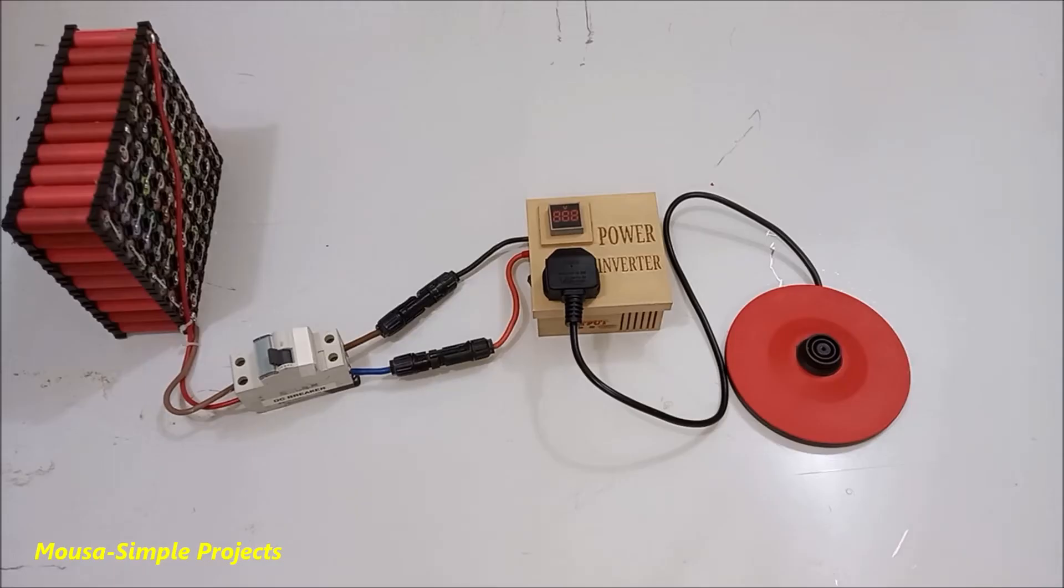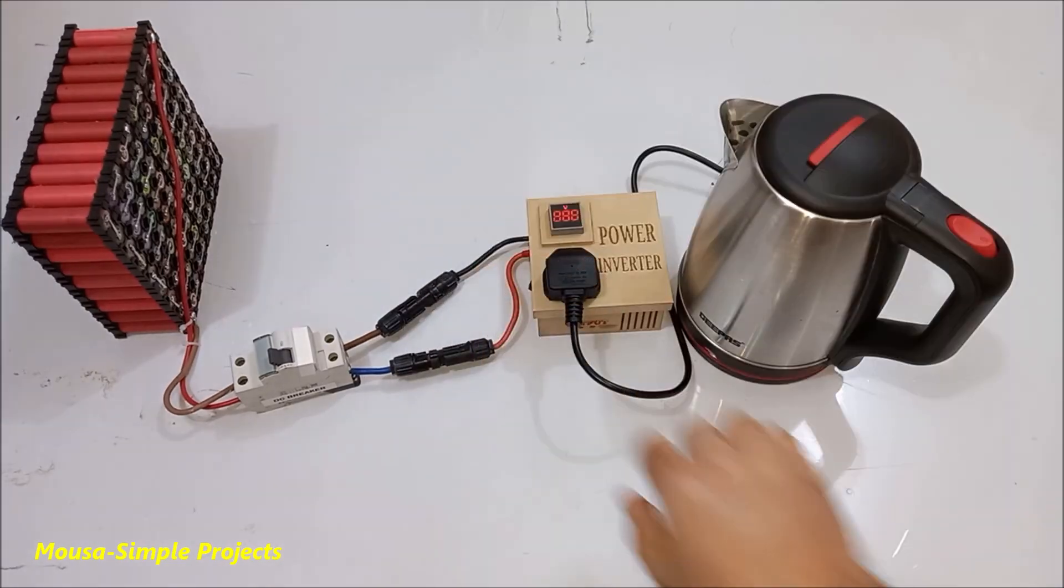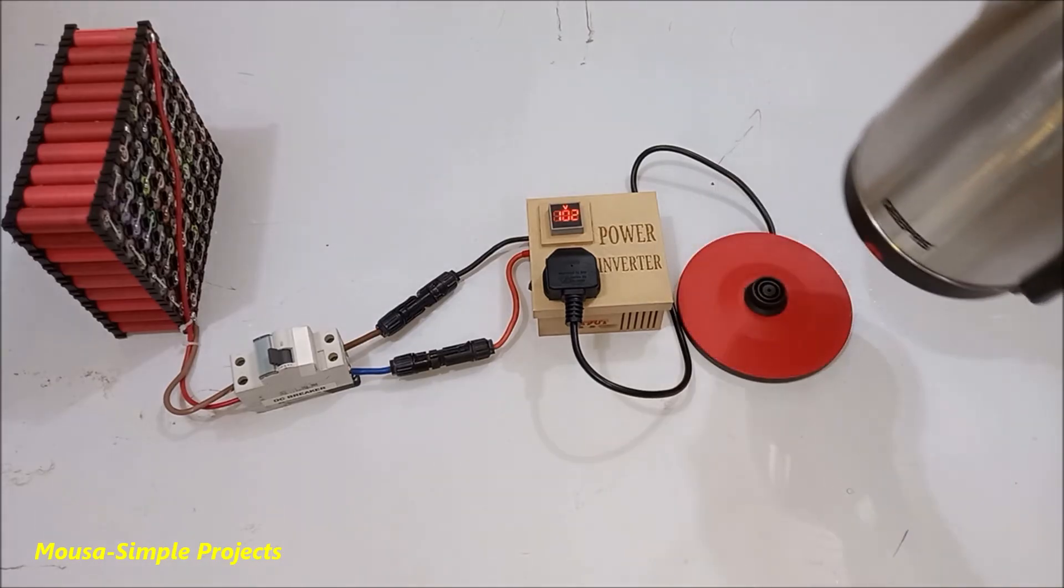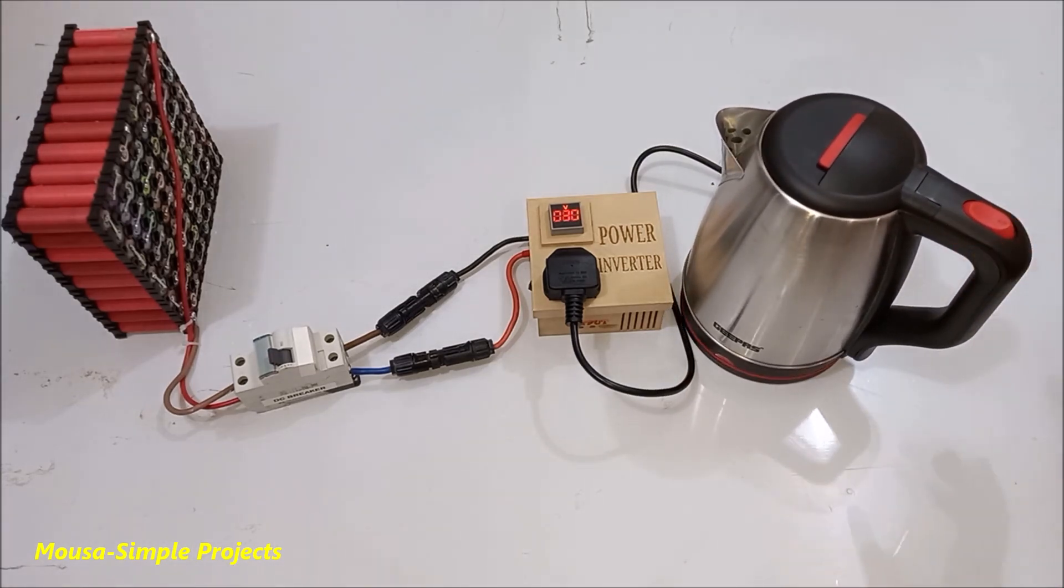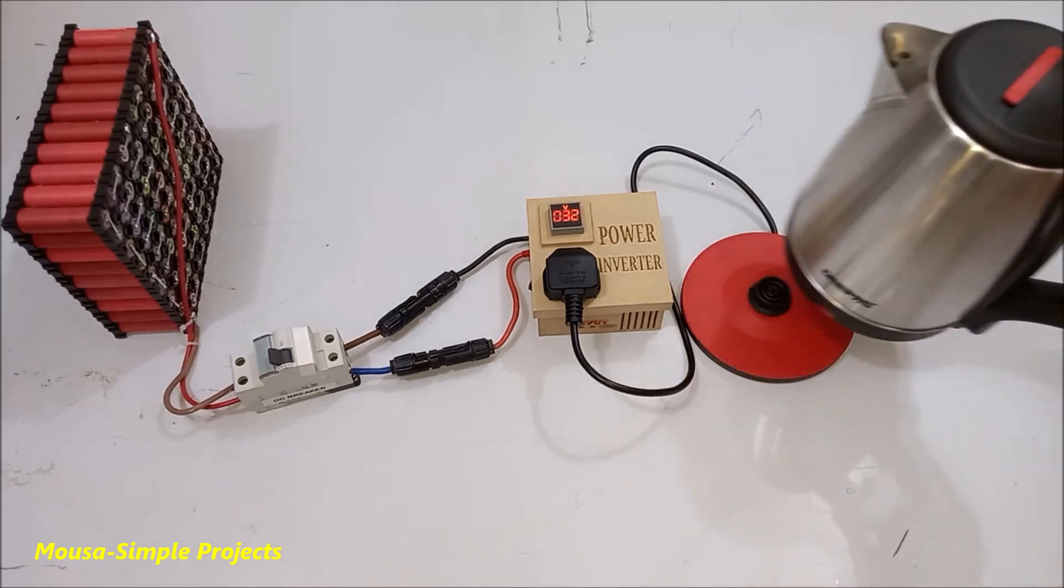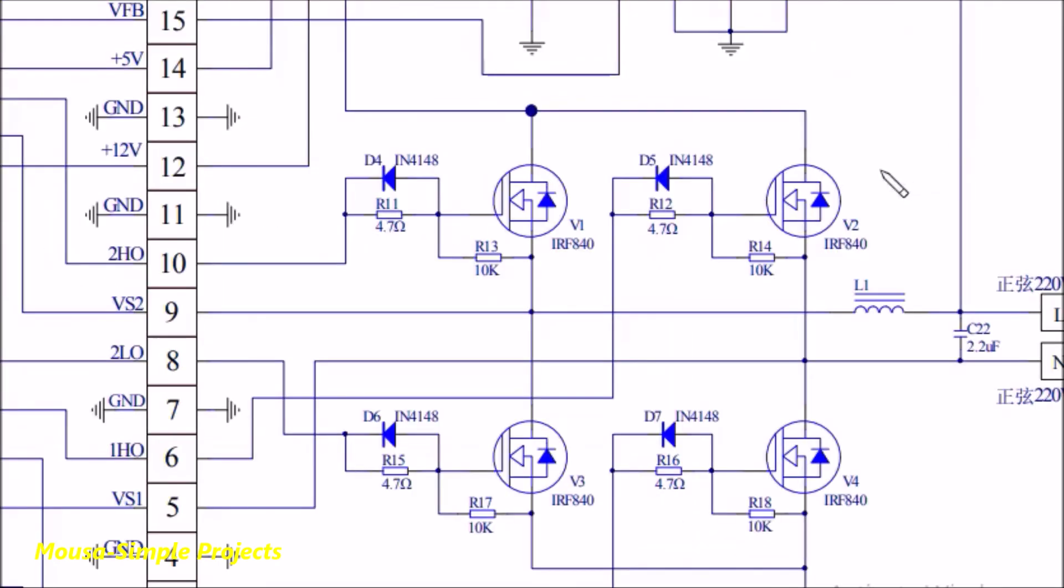Let's see what happens if I try to run a load with power consumption more than 1.1 kilowatts. This water boiler can consume 1.5 kilowatts. As you can see here, the driver board decreases the output voltage as an overload protection. If you need more power, you have to use a current shunt resistor with lower value and the proper MOSFETs that can handle that much current.